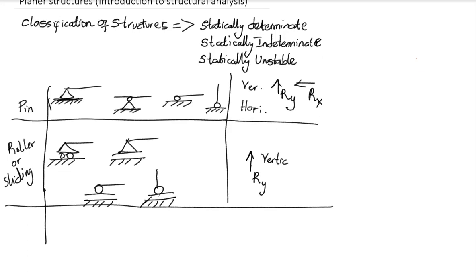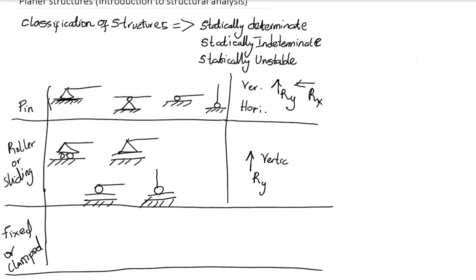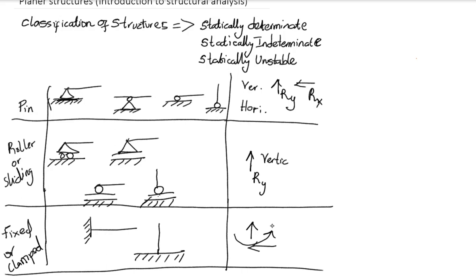The next and final type of support we see in structural analysis is the fixed or clamped support, sometimes called a clamped end. For the fixed support, there are three reaction forces: we have the vertical one, the horizontal one, and also a moment. Let's call these Ry (vertical), Rx (horizontal), and the rotational moment Mz.